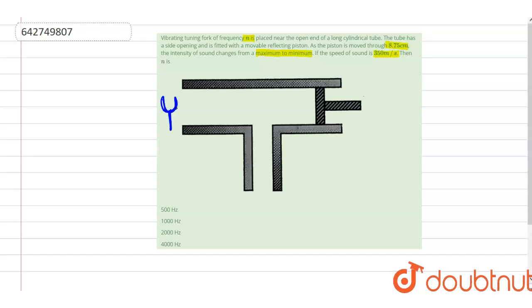So one thing which we have to first note here is that when this piston is moved by 8.75 cm, the intensity of the sound changes from maximum to minimum.